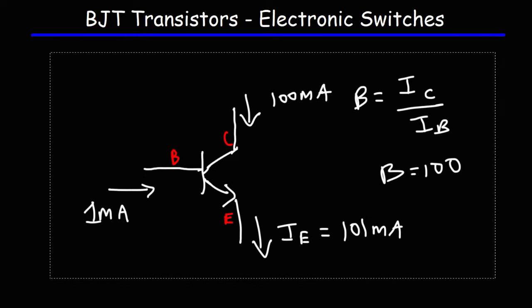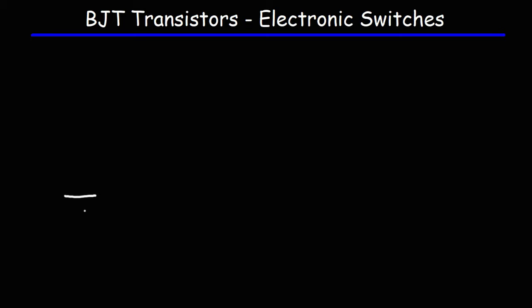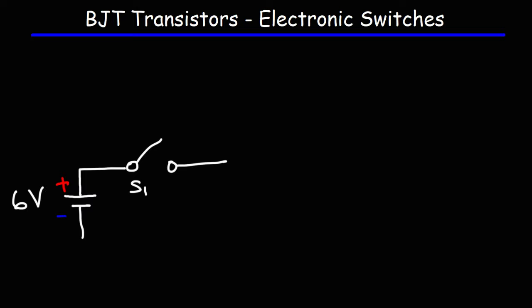Let's work on an example problem so you can see this in action. We're going to draw a chemical battery and then we're going to have a switch — we'll call that switch S1. This is the positive terminal of the battery, and the shorter side is the negative terminal. Let's use a 6-volt battery. Then we're going to add a current limiting resistor, which we'll call R1, and we'll give R1 a value of 10 kilo-ohms.